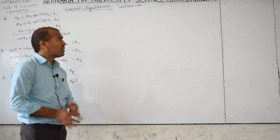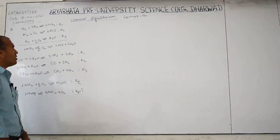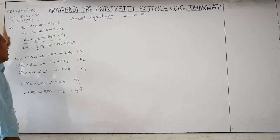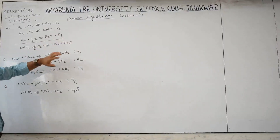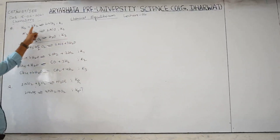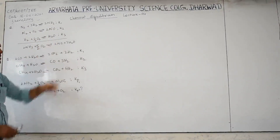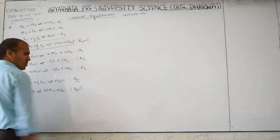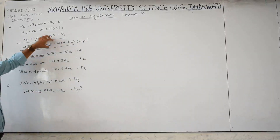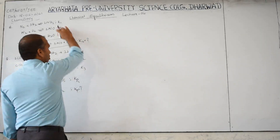Welcome to chemistry online classes — continuing from the previous class. We are discussing how K values depend on two things: one is temperature, and another is the mode of representation in stoichiometric coefficients. In the last class I discussed this equation but not completely, so now I want to discuss it again. For N₂ + 3H₂ → 2NH₃, the K values are K₁, K₂, K₃, and the resultant equation gives K₄. K₄ is the product of the individual K values from equations 1, 2, and 3.